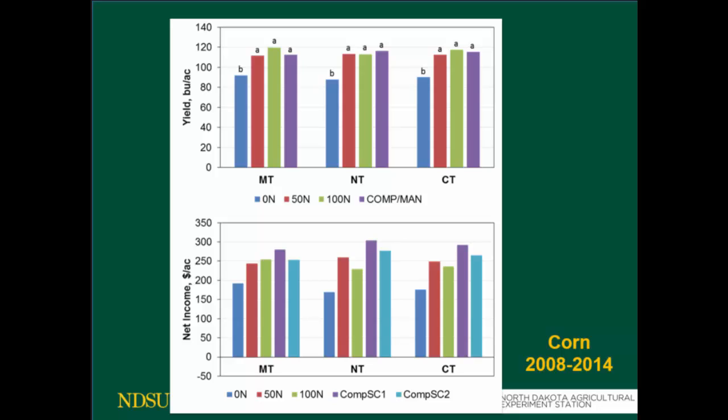When you look at corn yield data, it's basically the same behavior as barley — there is a response to nitrogen application but no difference between rate and source. Again, the compost treatment when you own it is always the best treatment, giving the highest net income. And even when you're paying for the compost, it still has the best income.